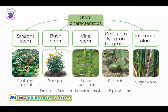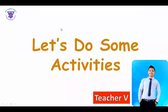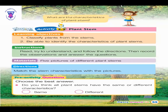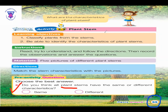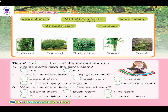Look at this picture. We are going to identify what type of STEM they have — their characteristics and sizes. Now let's do some activities. Go to page number 55 and answer this one. Do you think that all plant stems have the same or different characteristics? If you think they are the same, check that option. If you think they are different, choose and check that one.